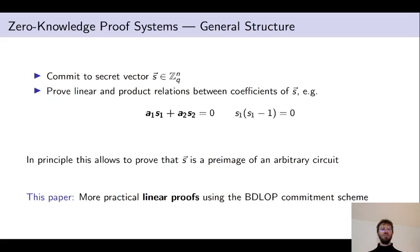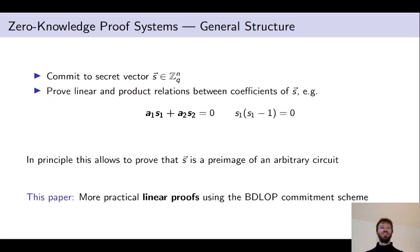In this paper the goal is to focus on the first part and construct a more practical linear proof for a particular lattice-based commitment scheme, namely the BDLOP commitment scheme. This can then be combined with an efficient product proof to construct a full-fledged proof system.